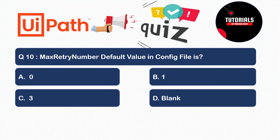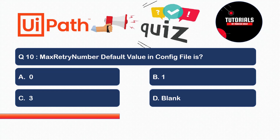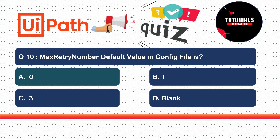Question ten: What is the max retry number default value in the config file? RE Framework can work with queues, data tables, or lists. The max retry number is a property in the configuration file in the data folder. Options are zero, one, three, or blank. The correct answer is zero. As a developer you can change this, but the default value is zero.